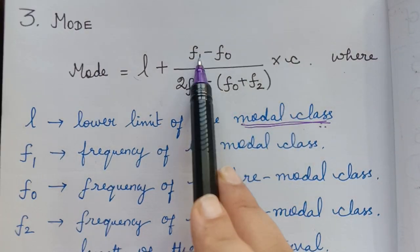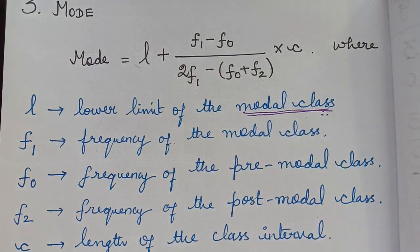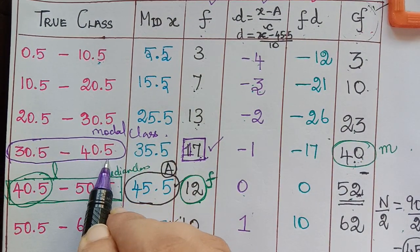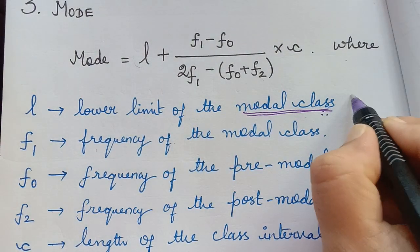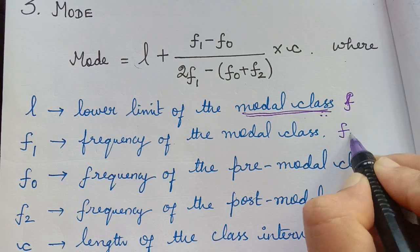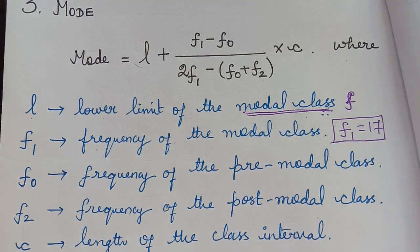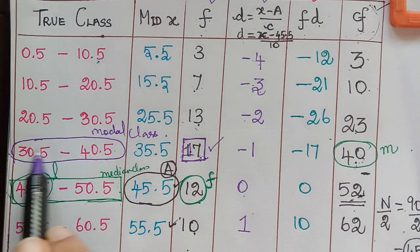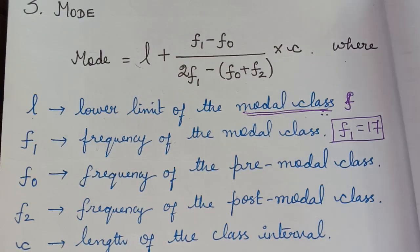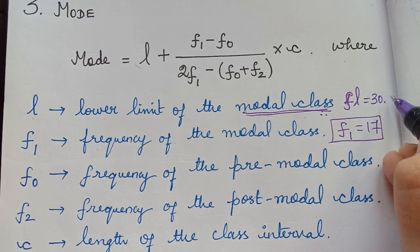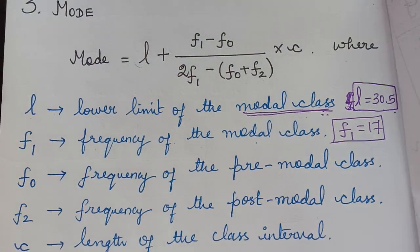In the formula we have F1, F0, F2, and C. F1 is the frequency of the modal class, which is 17. L is the lower limit of the modal class. The modal class has a lower limit of 30.5, so L = 30.5 and F1 = 17.